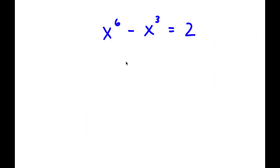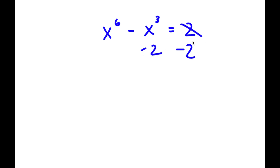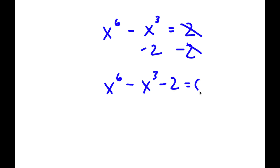So in this problem, I have x to the power of 6 minus x to the power of 3 is equal to 2. To solve this, I'm going to first subtract 2 on both sides. So now I have x to the power of 6 minus x to the power of 3 minus 2 is equal to 0.